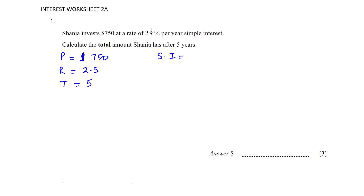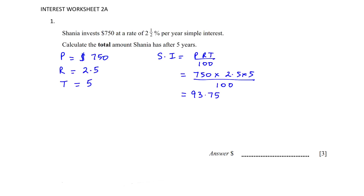To find simple interest we will do PRT over 100. We replace P, R, and T and we get 93.75. If they wanted only simple interest we would stop here, but they want the total amount Shania has after five years. So we use: Amount = Principal + Interest = 750 + 93.75 = 843.75.